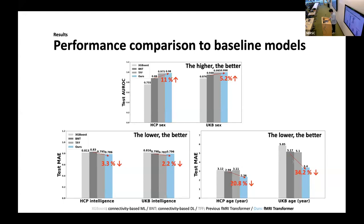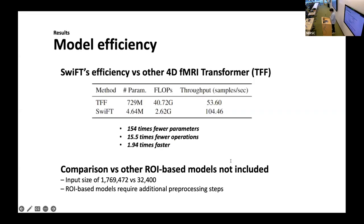In intelligence prediction tasks, SWIFT showed a small performance gain in mean absolute error. However, it is notable considering that the intelligence task is itself a very hard task. In HCP tasks, SWIFT showed remarkable performance gain compared to the other baseline models. SWIFT is also more efficient than the existing 4D fMRI transformer. While TFF has shown comparable performance to SWIFT in some tests, SWIFT requires much fewer parameters, fewer computational costs, and is also much faster. Since XGBoost and BNT utilize handcrafted features and require additional processing steps, comparison with those models was not included in these slides.